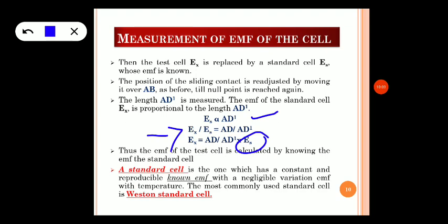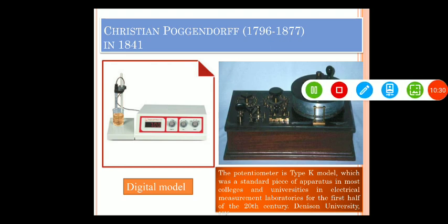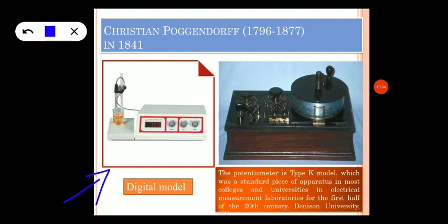The standard cell is one which has a constant and reproducible EMF with negligible variation with temperature. The most commonly used standard cell is the Weston cadmium cell, whose construction and working will be discussed in the next video. Currently, we make use of the digital model of the potentiometer — the Wheatstone bridge method is an old model no longer in use. In the digital model, EMF is measured as a digital reading in volts. The model shown here is the first potentiometer — the K model — used in the 20th century at Denison University.